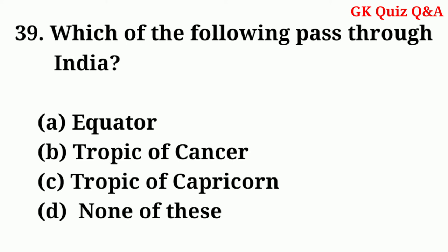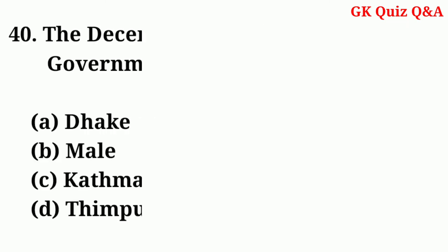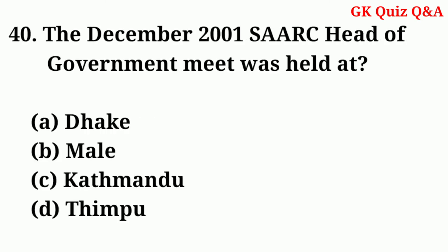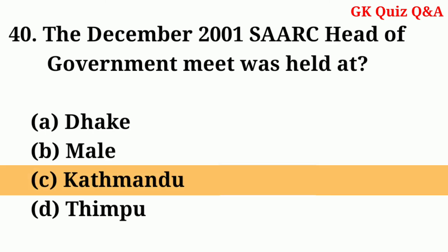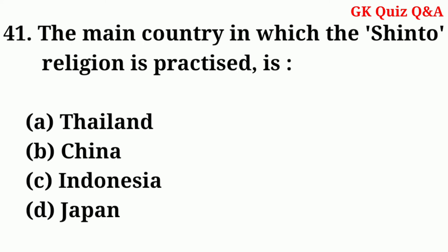Answer: B — Tropic of Cancer. The December 2001 SAARC Head of Government meeting was held at — Answer: C — Kathmandu.